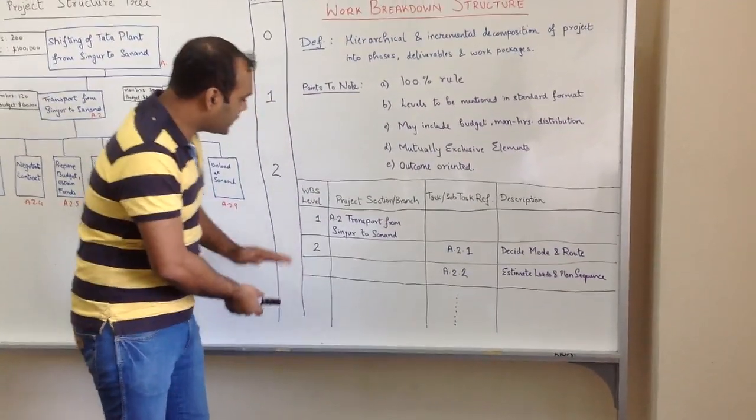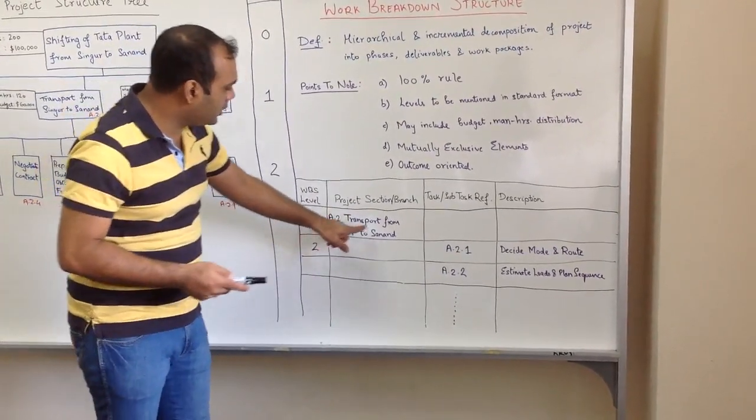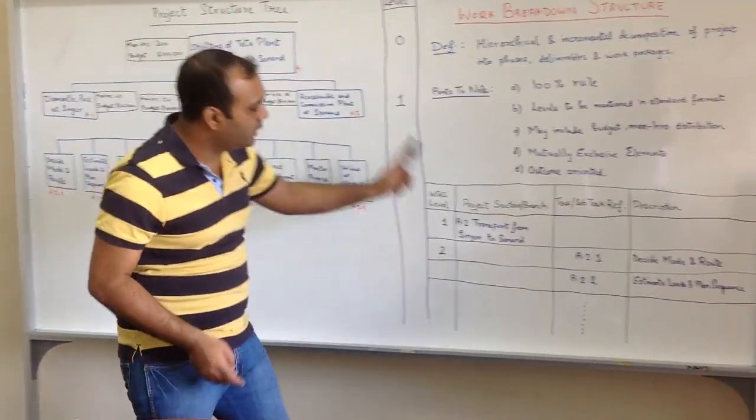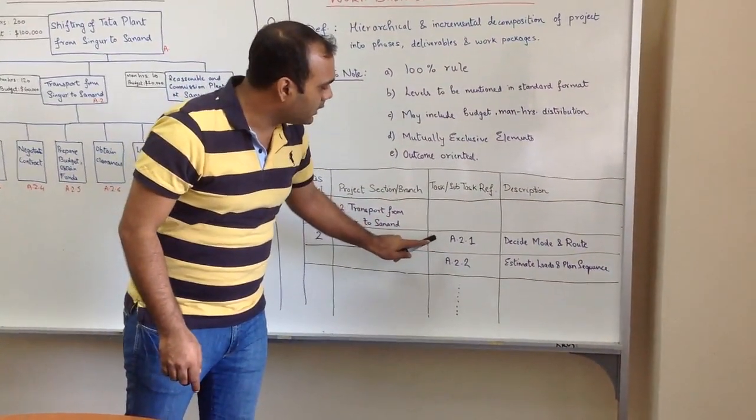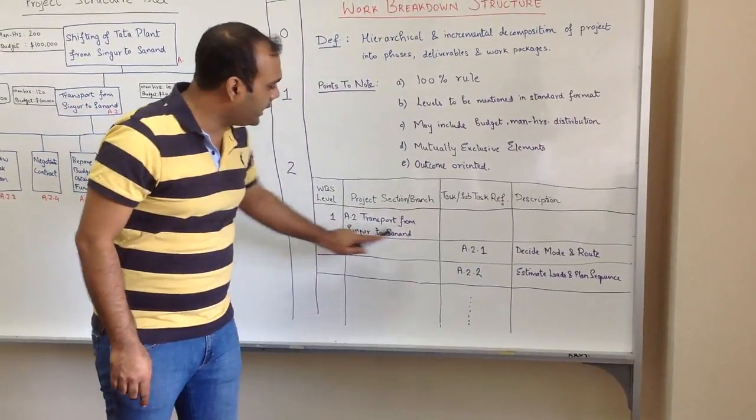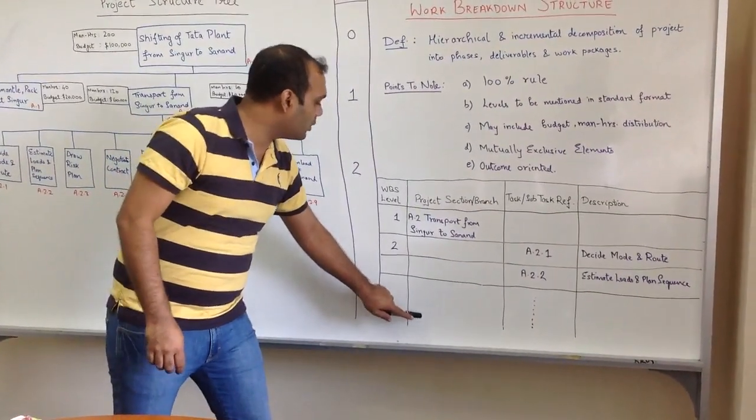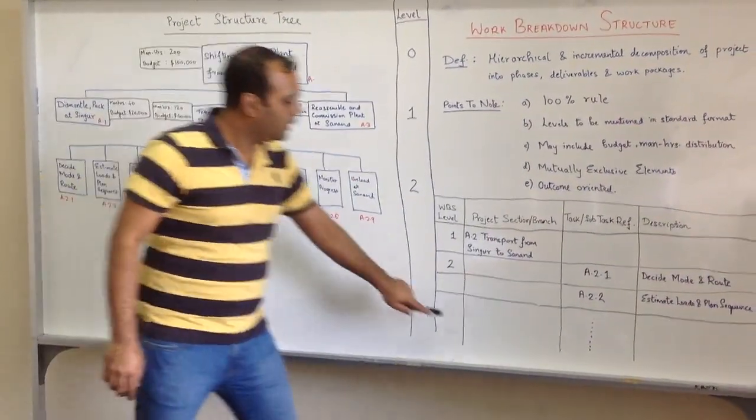You can see A2, transport from Singur to Sanand, which was here, I've transposed over here. Then the subtasks within A2 will all be listed here. Once they're complete, we come to the next, which would be A1 or A3, which will be listed here with all their subtasks.